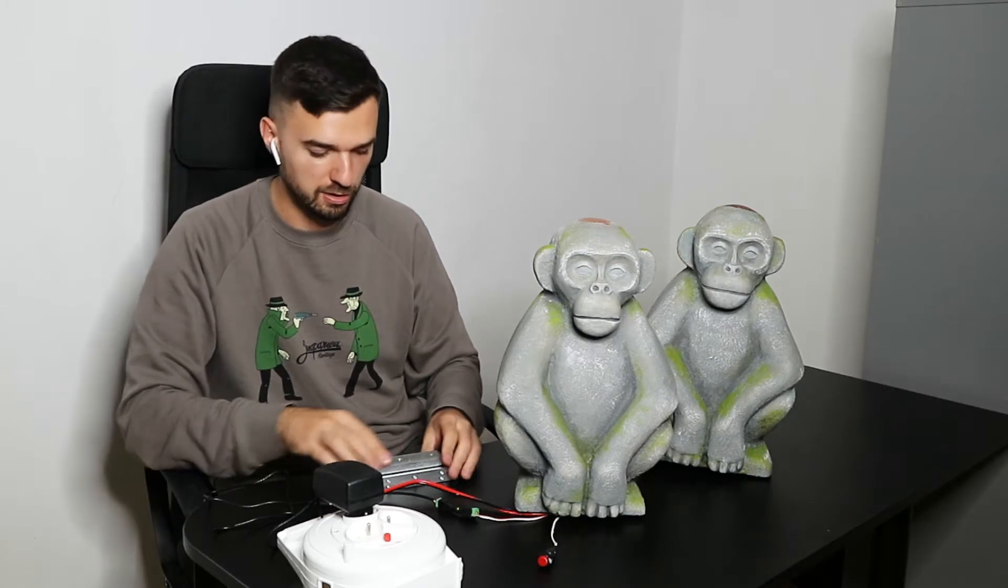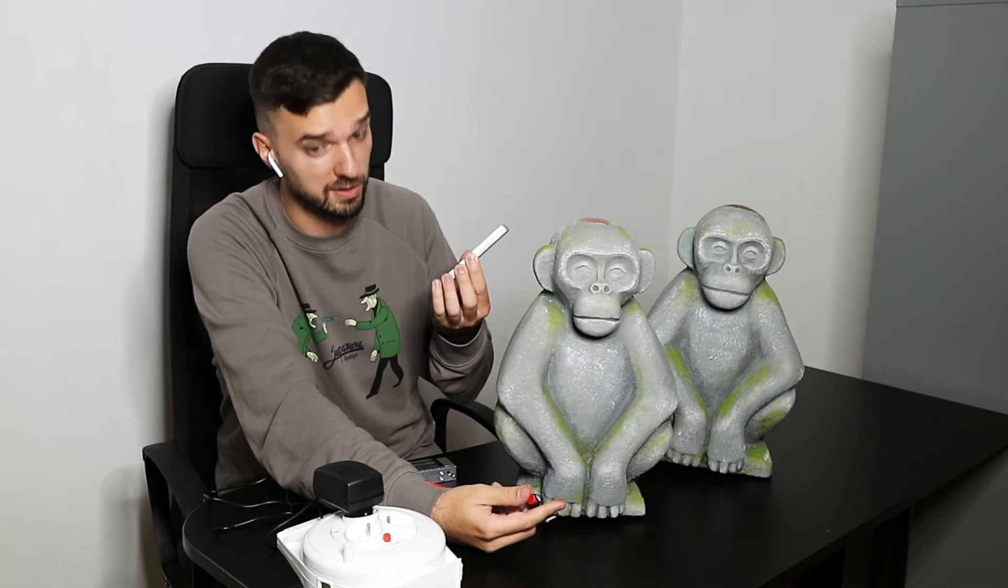You can see it's now engaged again. And this is the button for the game master. If the players have some trouble solving the puzzle, the game master can just press the button and the electromagnetic lock disengages.